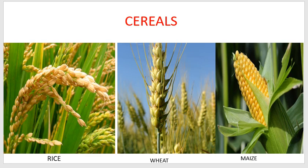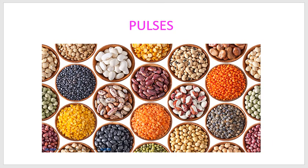Next comes pulses. We all eat pulses also. Every day we eat dal. We eat curries made up of green gram, green peas, or black-eyed peas. Masur dal — there are so many pulses. Some examples are rajma, chana dal, urad dal, moong dal, tuvar dal. All these are examples of pulses.